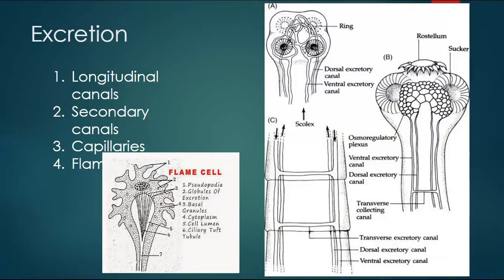Now we move to the next system, which is very important: the nervous system of Taenia solium. The nervous system coordinates the whole body of Taenia solium. Taenia solium has two cerebral ganglia present in the scolex part.